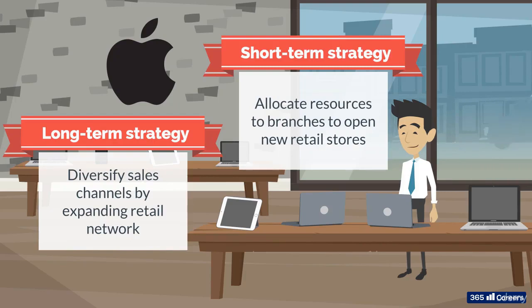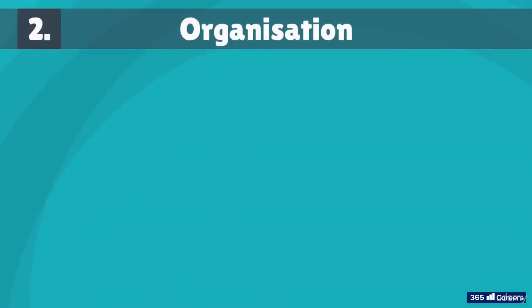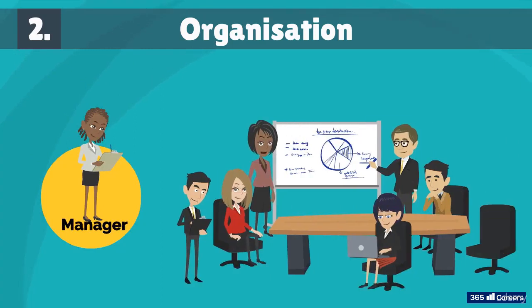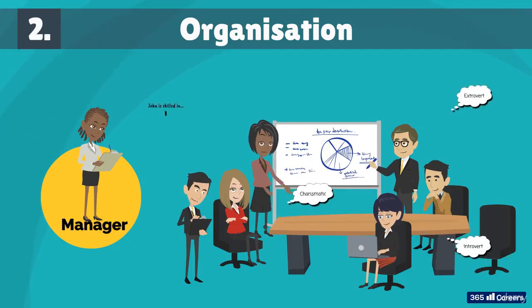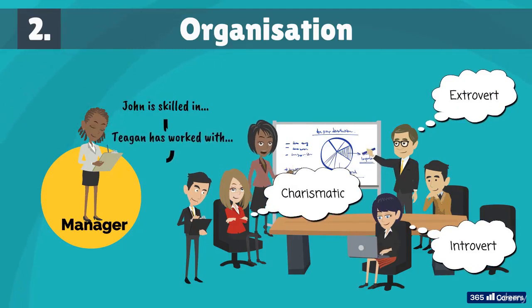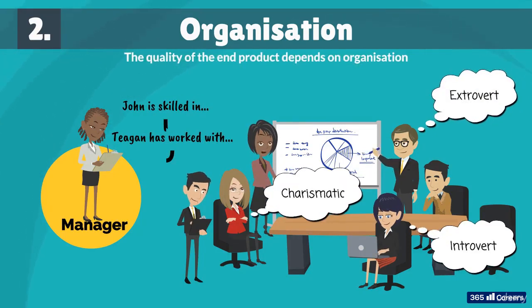Have you heard the quote, "plan your work and work your plan"? Once we have a plan, we have to put it into action. And to do that, we need organization, which is another major task managers have. This involves getting people together and observing how they interact and work with each other to achieve a common goal. Organizing the workflow in a firm is a lot subtler than it seems at first. A successful manager considers the personalities of the people who will work together, their skills and previous background, along with other available resources like technology, money, and equipment. The way all these variables are organized and put into use shapes the quality of the final output the company produces.